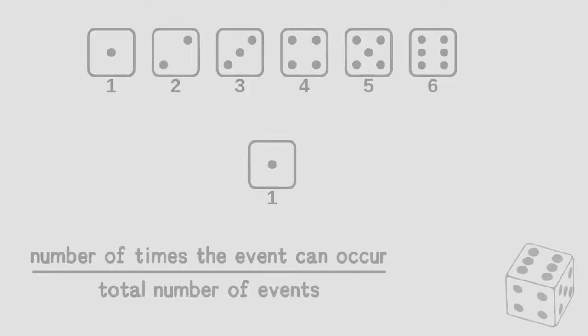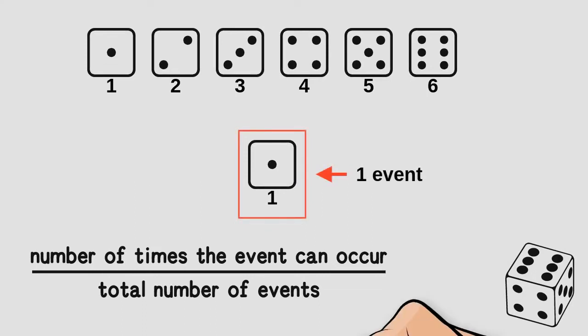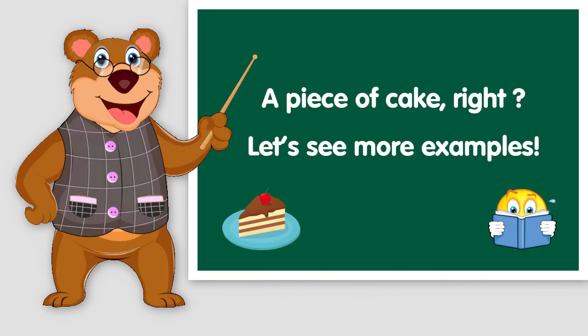Similarly, we can calculate the probability of rolling a one when we roll a die. Using the same procedure: the number of times the event can occur equals one, because there is only one face with a one on it, and total number of events equals six. That gives us one divided by six — a one in six chance of rolling a one. In the same way, we can calculate the probability of rolling any face on the die, always getting the same result.